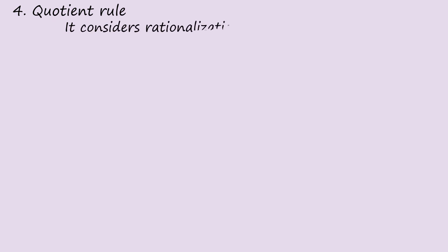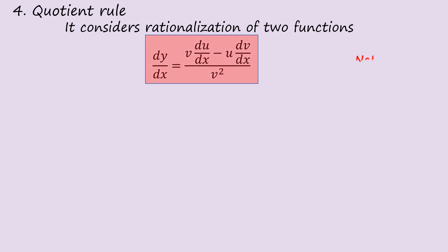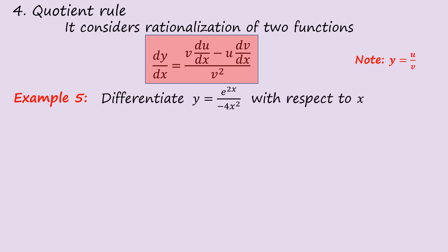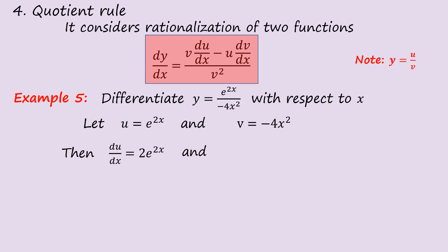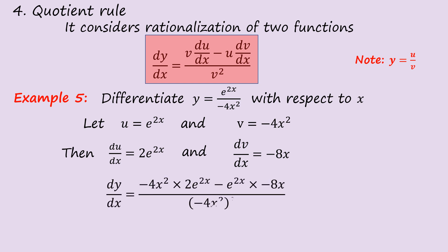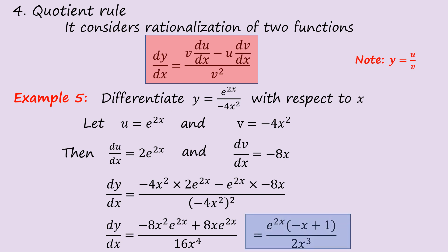Quotient rule: it considers the division of two functions. The formula is: dy/dx = [v·(du/dx) − u·(dv/dx)] / v², where y = u/v. Example 5: Differentiate y = e^(2x) / (−4x²) with respect to x. Let u = e^(2x) and v = −4x². Then du/dx = 2e^(2x) and dv/dx = −8x. Substituting into the formula and simplifying, the final answer is e^(2x)(x − 1) / (2x³).